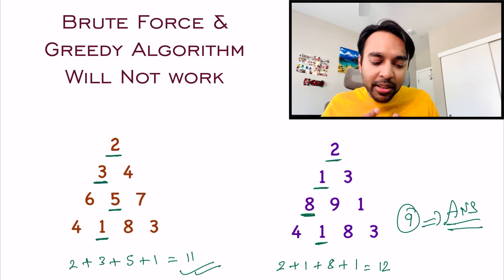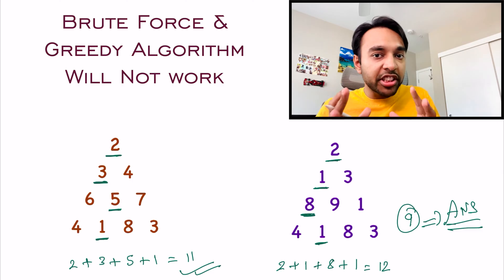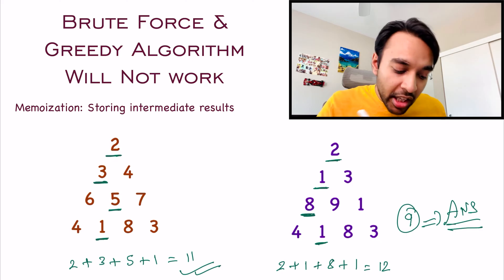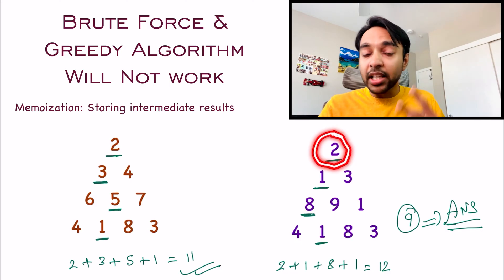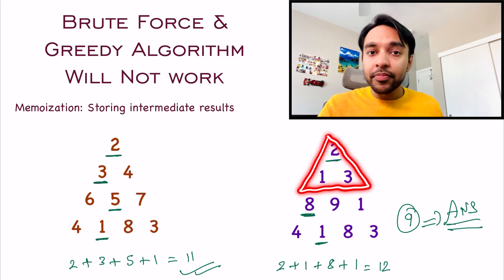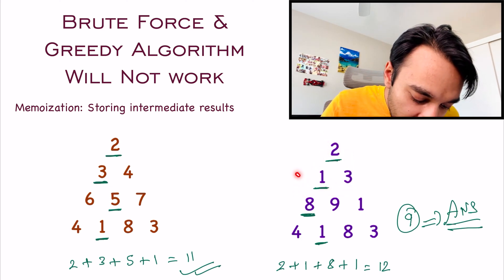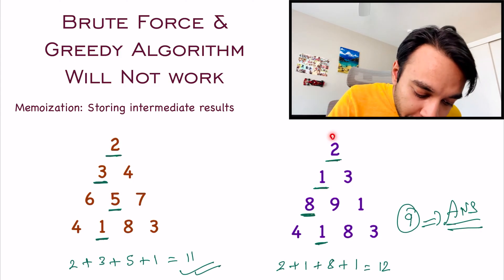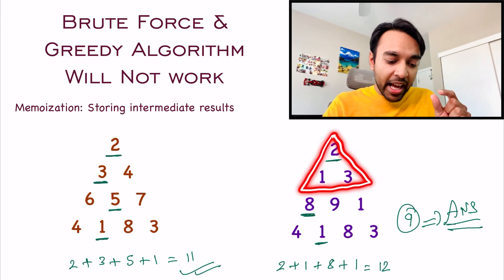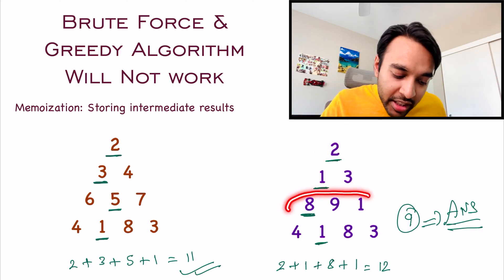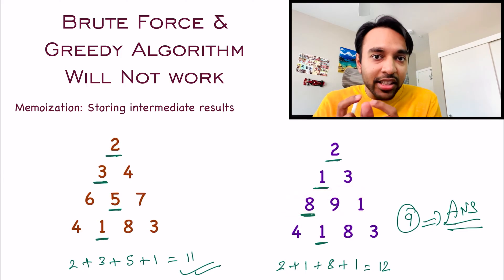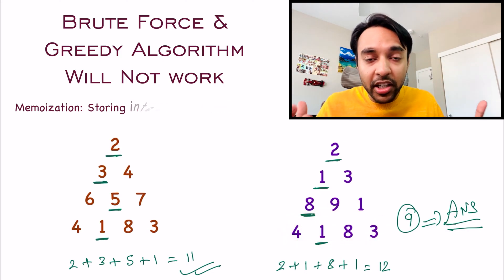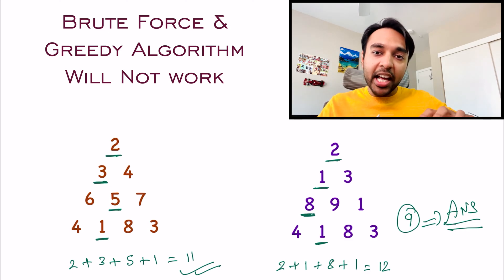We need to approach this problem in a different way, and that is where dynamic programming comes in. In dynamic programming, at every level you store your results using memoization. If your triangle only had 1 level, the minimum sum is 2. If it had 2 levels, the minimum sum would be 3 — picking 2 and 1. You store the result for each smaller sub-triangle, then include each new level, expanding until you find the ultimate solution.